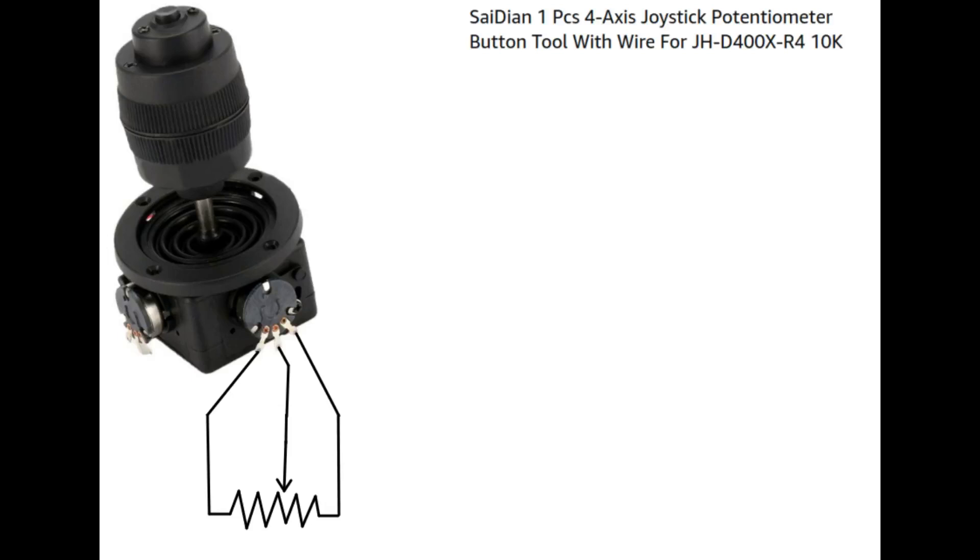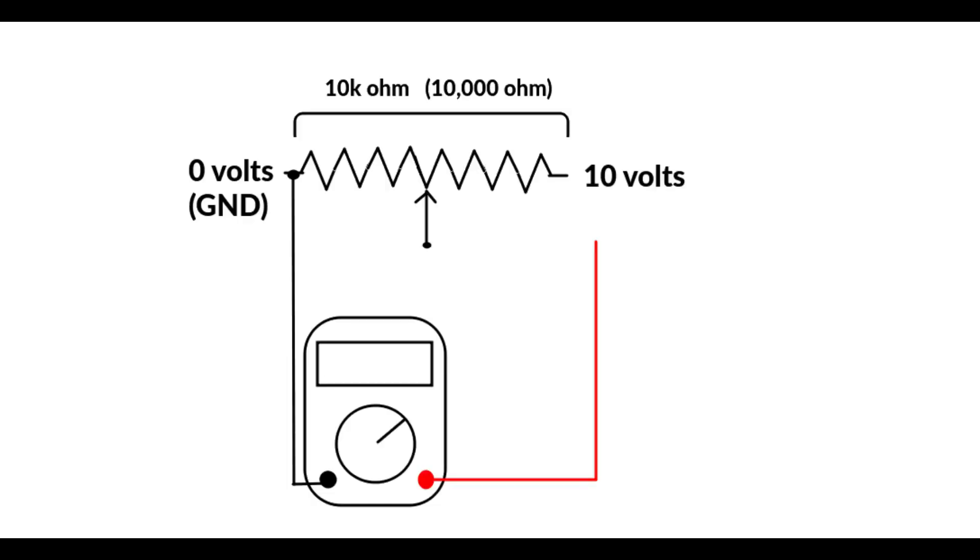So let's say we have a 10 kilo ohm potentiometer and we're still applying 10 volts across the constant 10 kilo ohms. So if we connect our meter from 0 volts to the wiper and the wiper is positioned right in the middle so we have 5 kilo ohms of resistance, we're still going to read 5 volts. That's because we have 5 kilo ohms of resistance on both sides of the wiper.